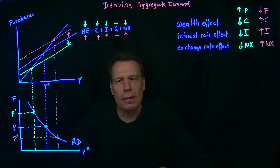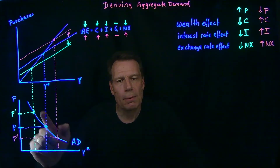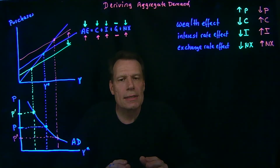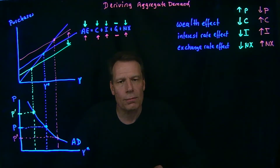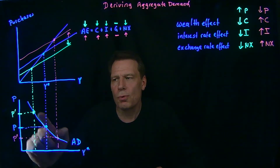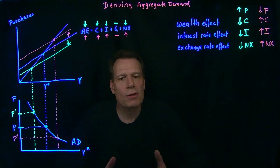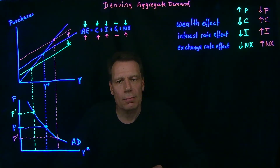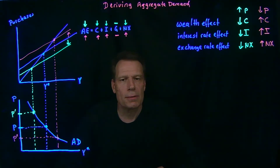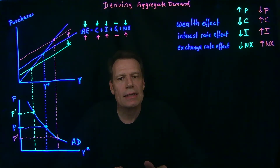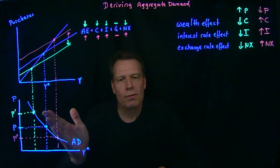In microeconomics, if the price changes, we move along the demand curve; but if anything else changes, the demand curve will shift. The same is true for an aggregate demand curve. The only thing that can cause you to move along the aggregate demand curve is a change in the price level — what appears on the vertical axis. Anything else that changes in the economy will shift the aggregate demand curve. For example, a change in government purchases — which we've taken to be exogenous — will shift aggregate expenditures at any given price level, causing a shift in the aggregate demand curve.